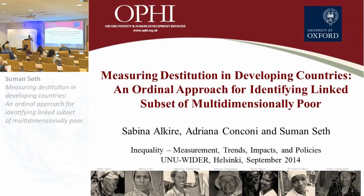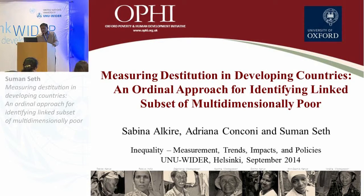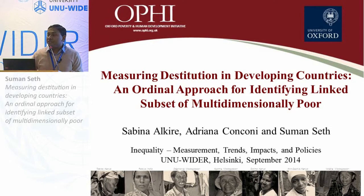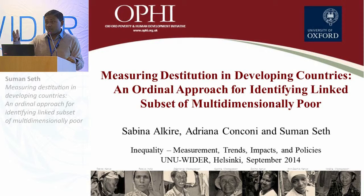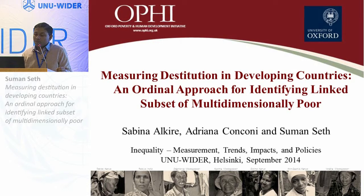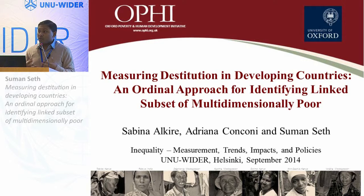This is a joint work by my colleague Sabine Alkair and Adriana Konkoni. Every year we try to do analysis based on the multidimensional poverty index that OPHI has developed, based on the methodology proposed by Professor James Foster and Sabine Alkair. This year, our objective was to explore the distributional issues among the multidimensionally poor — specifically those facing a much more severe form of deprivations — based on an empirical application on nearly 50 developing countries.